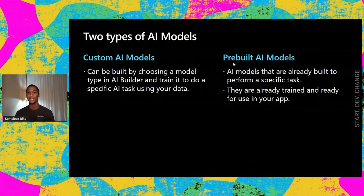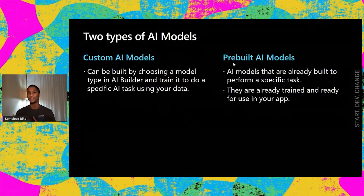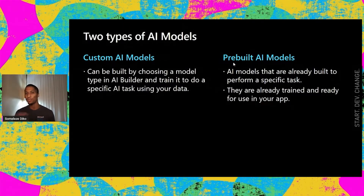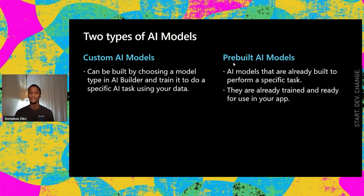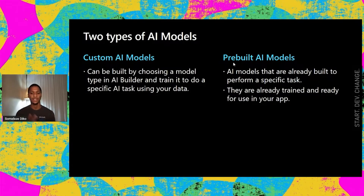Then there are the pre-built models. Think of them like police dogs — those dogs already know the drill. When you have them at your house and there's a burglar, they're already barking. You don't have to teach them, you don't have to train them, you don't have to do anything. They already know their job. So with pre-built AI models, they're already trained and already built. You just take them and add them to your application.